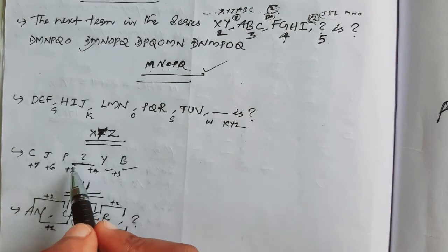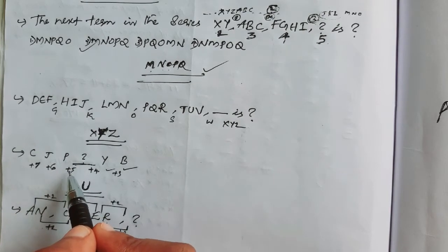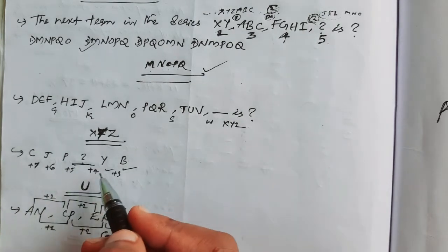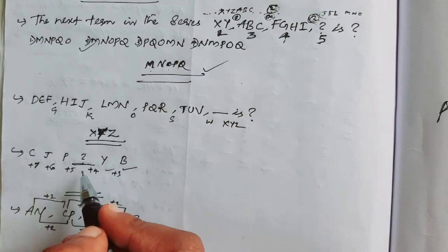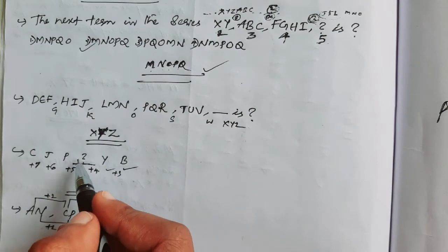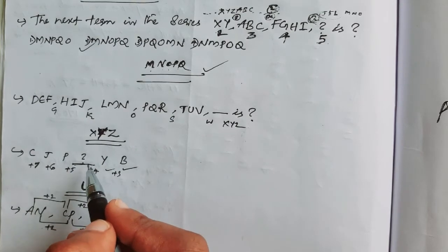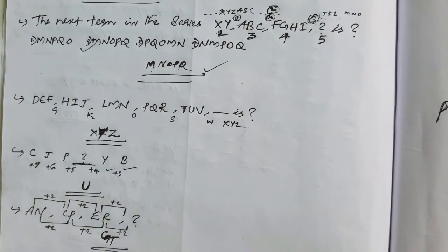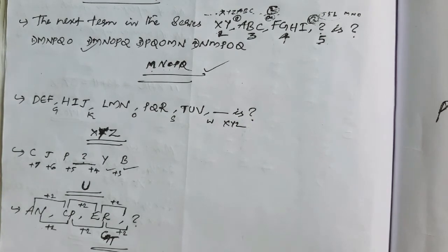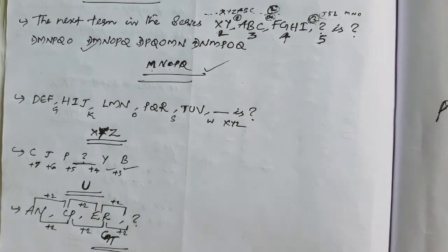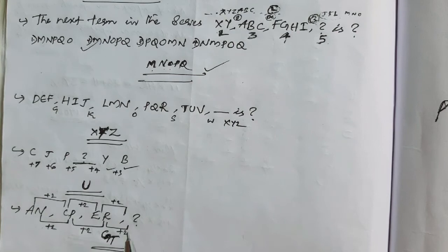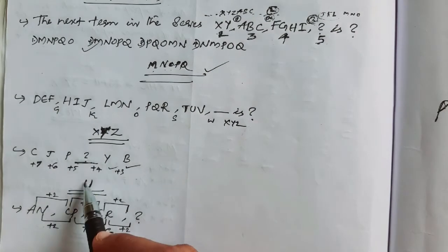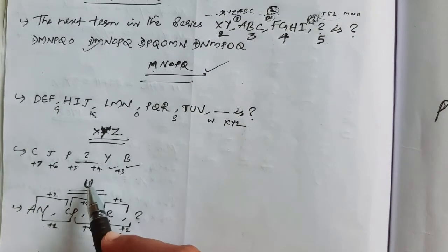That's why we have plus 7 and plus 6. The next term is plus 5. So P plus 5 — P is position 16, and 16 plus 5 equals 21. Then 21 is U.